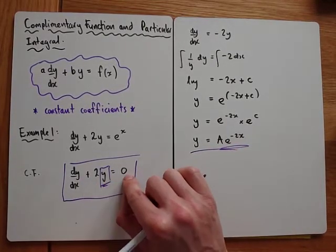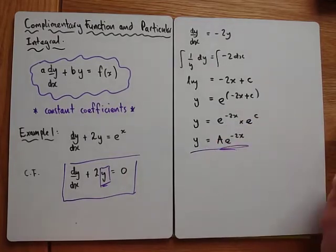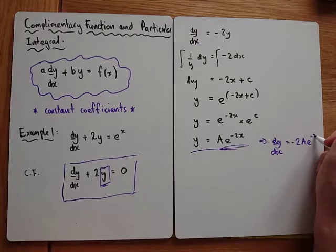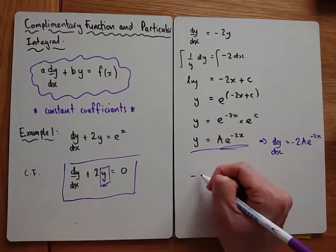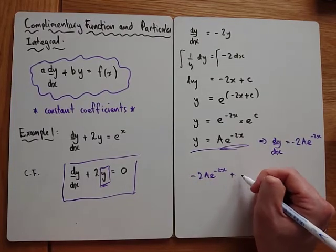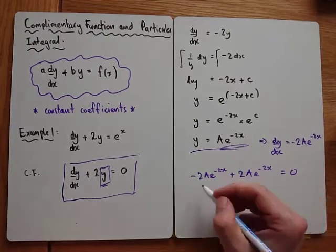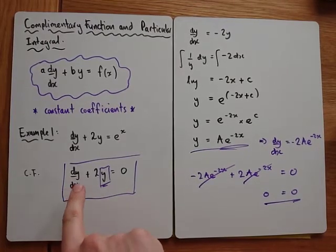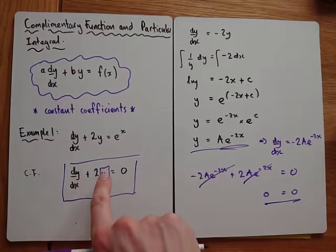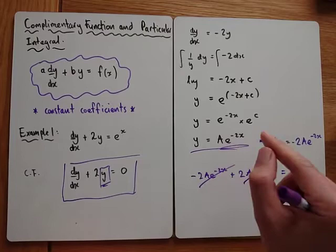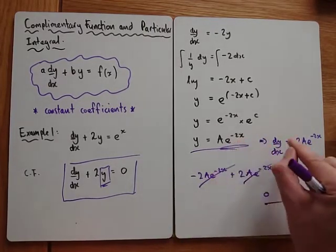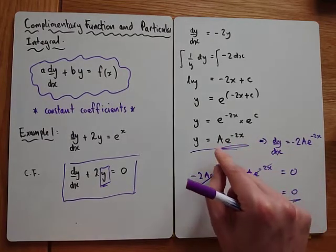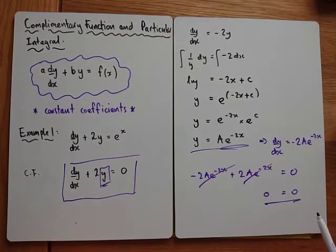Let's just check: if I sub in y equals ae to the minus 2x, then dy by dx would be minus 2a e to the minus 2x. When we combine these — dy by dx plus 2y gives minus 2a e to the minus 2x plus 2a e to the minus 2x — that cancels each other out and we do get zero, which is what we wanted. The reason why this works is the great thing about exponentials: when you differentiate them, they essentially stay the same. There'll be a specific value of k where they cancel out and we're left with zero.